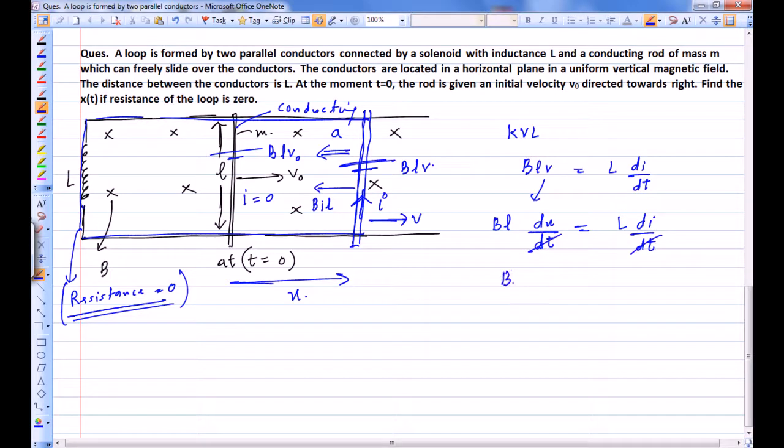Or rather you have BLV equals LI. This is your first equation for this particular instant. Our acceleration of this rod is going to be BIL over M with a negative sign because velocity and acceleration are in opposite directions. Or rather that I can be written in terms of V.